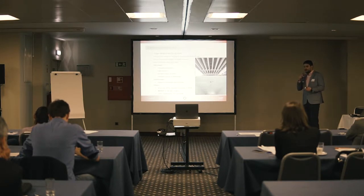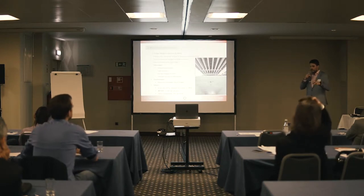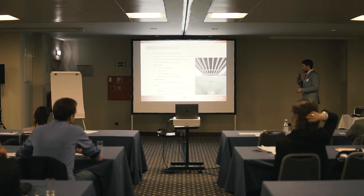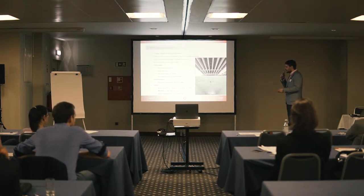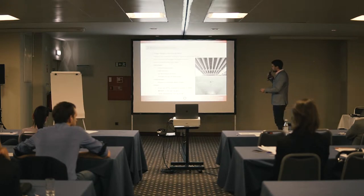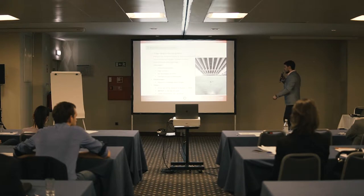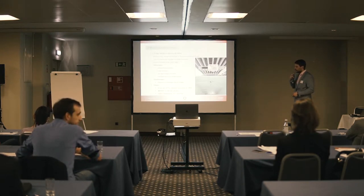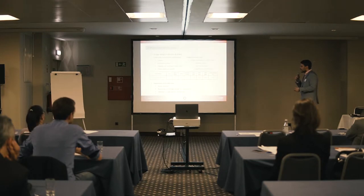A disadvantage is that it requires a certain level of knowledge about bridges, so you need an experienced bridge designer to decide where to put sensors, when to measure, and how long to measure. The bridge weight-in-motion system we use was developed in Slovenia since the early 90s and is called Sibin. Sensors are placed under the bridge on each girder at midspan and at the bridge ends. It is now used in more than 25 countries — in some countries for assessment, in others only for traffic statistics.